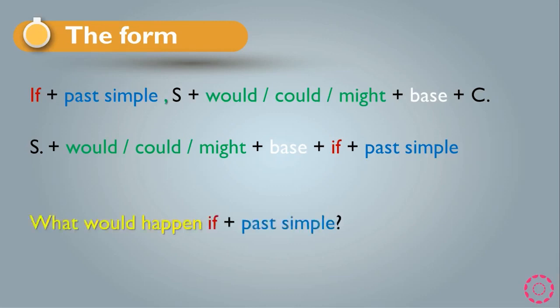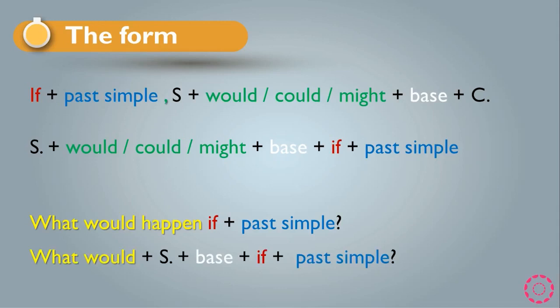When we want to change a second conditional sentence to a question, we use one of two rules. The first is: 'What would happen + if + past simple + question mark.' Or we can say: 'What would + subject + base + if + past simple.' These rules, shown in yellow, are used to form questions in the second conditional.